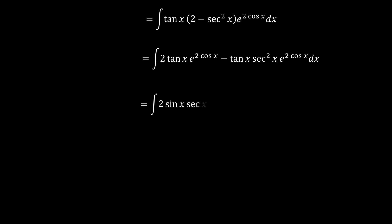Now tangent(x) can also be expressed as sin(x) times 1 over cos(x), or sin(x) times sec(x). So the expression 2tan(x)·e^(2cos x) can be expressed as 2sin(x)·sec(x)·e^(2cos x).